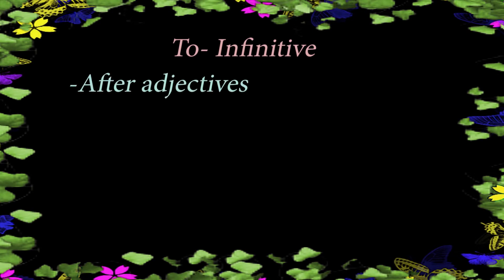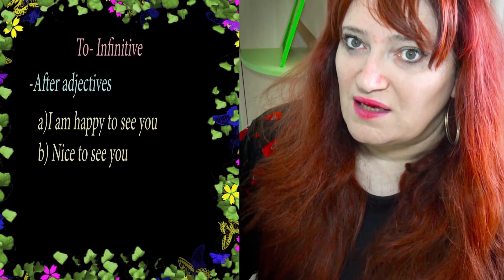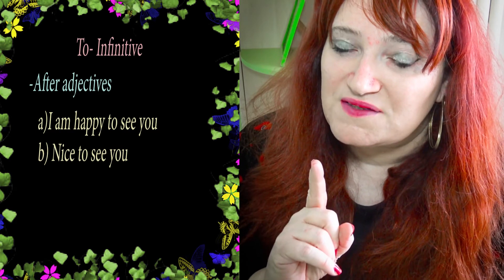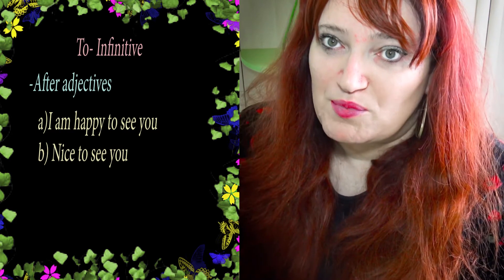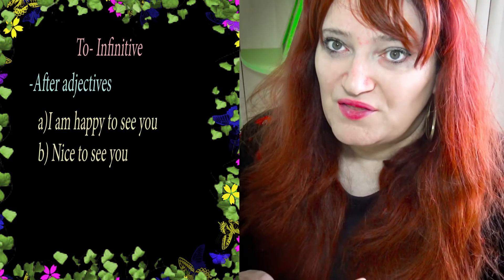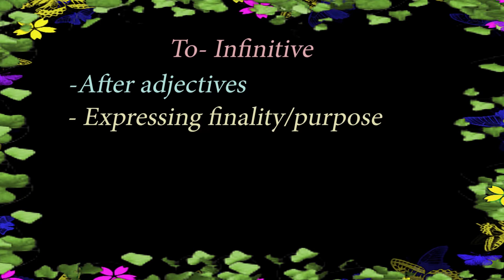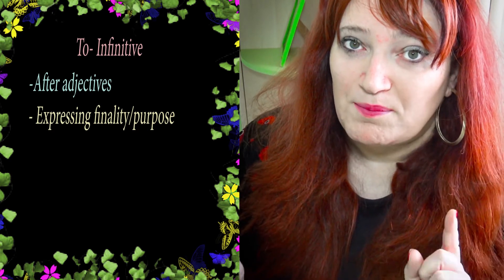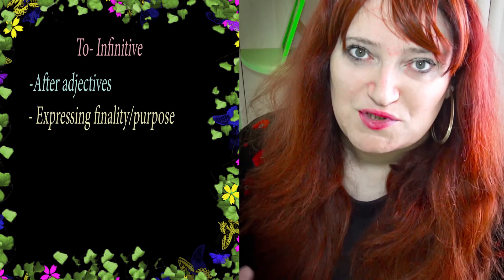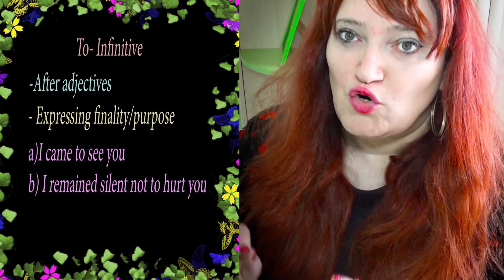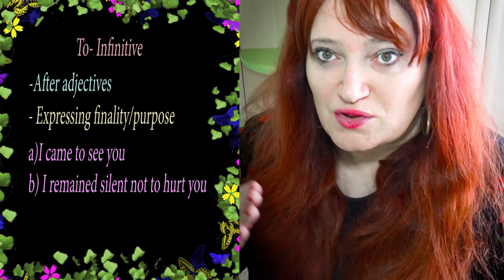Now let's finish with the to-infinitive form. When do we use it? After adjectives — for example, 'I am happy to see you,' 'Nice to see you.' But be careful: this only applies to adjectives that don't compulsorily take a specific preposition, like 'tired of' or 'fed up with' — those require a gerund. Also, when you express finality or purpose — this is when we say 'para' in English. Other ways: 'in order to,' 'so as to,' 'with the aim to.' Examples: 'I came to see you.' 'I remained silent not to hurt you.'